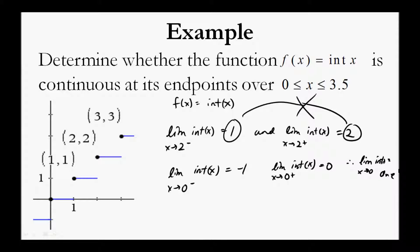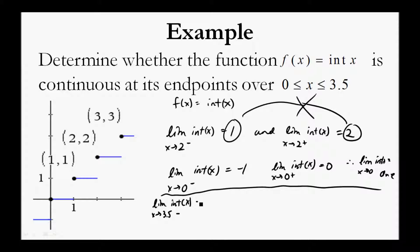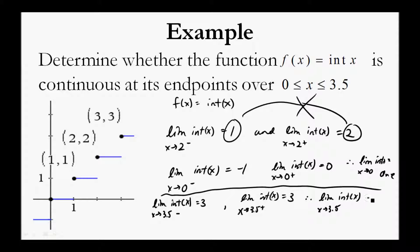When looking at the endpoint x equals 3.5, we determine that the limit of int(x) as x approaches 3.5 from the left equals 3. Therefore, we know the limit of int(x) as x approaches 3.5 from the right equals 3 as well. The limit exists because the left-hand limit and the right-hand limit both equal the same value of 3. Thus, the limit of int(x) as x approaches 3.5 equals 3.